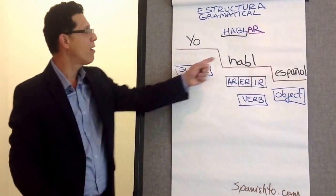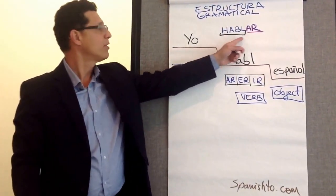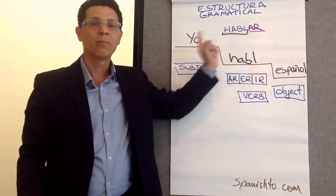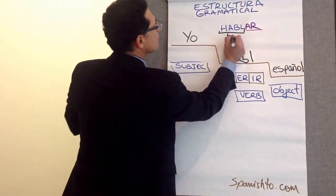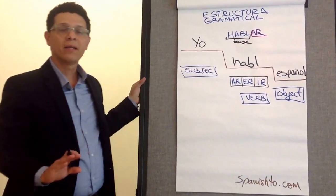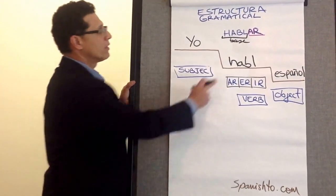Okay, so that part that is remaining after you take the ending away is called base. So you take away the ending and keep your base. Put it down there.